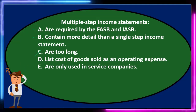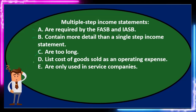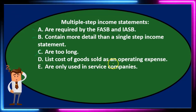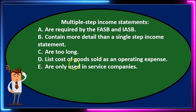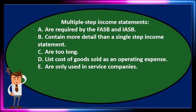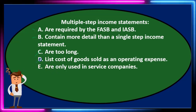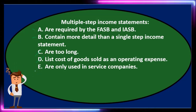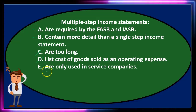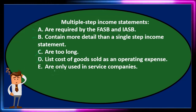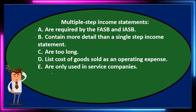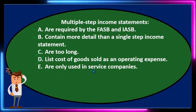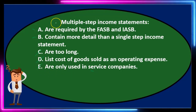D) list cost of goods sold as an operating expense — cost of goods sold does appear on a multi-step income statement, but it's broken out into its own category at the top, not grouped with all other operating expenses as in a single step format. So that's not correct. E) are only used in service companies — service companies don't have cost of goods sold, so the multi-step format is most useful for merchandising companies, not restricted to service companies. That's not true either. We're left with A and B.